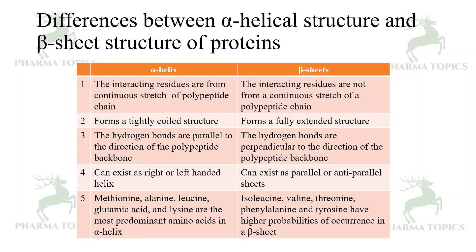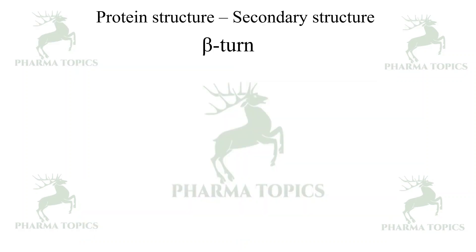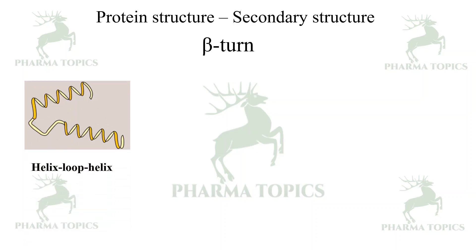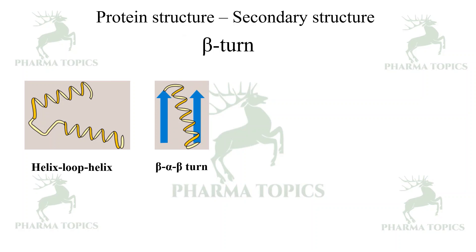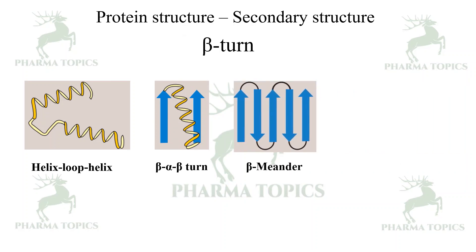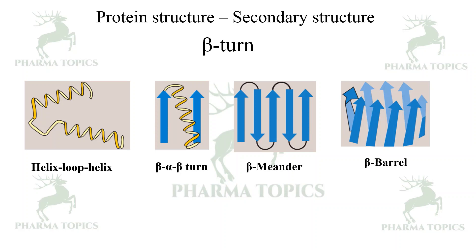Amino acids with higher probabilities of forming alpha helices include methionine, alanine, leucine, glutamic acid, and lysine; those favoring beta sheets include isoleucine, valine, threonine, phenylalanine, and tyrosine. Beta turns are also secondary structures. Secondary structures may include helix-loop-helix, beta-alpha-beta turn, beta meander, or beta barrel arrangements. Reverse turns typically involve two amino acids: proline and glycine.